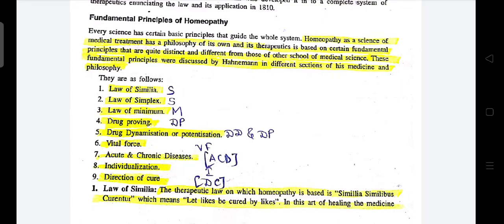To remember this series of nine philosophical sections, a mnemonic has been made using the initials: S, S, M, D, P, D, N, D, P, V, F, A, C, D, I, D, C — you can memorize these in the form of rhymes to remember the series of nine philosophical sections.